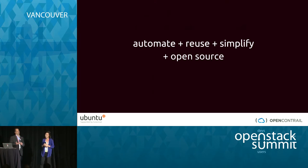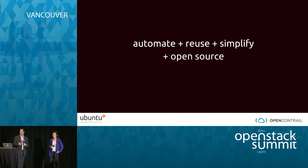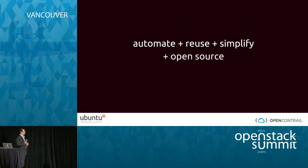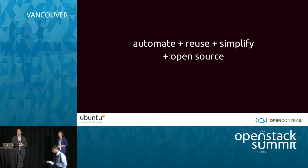When we started our journey together as two companies — we announced this six months ago in Paris — it was driven by the fact that we were both being approached by carriers asking for help competing in this new world. They were looking to automate things, reuse, scale, and simplify. OpenContrail, Ubuntu, OpenStack, and our tooling like Juju are all open source, and that was very important to them.